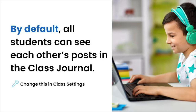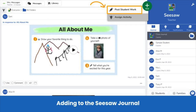Please note that by default, students can see each other's posts in the class journal. This setting can be disabled by the teacher in their class settings. The green Add button is where it all begins. Teachers can post to the class journal by tapping the green Add button, then selecting Post Student Work.